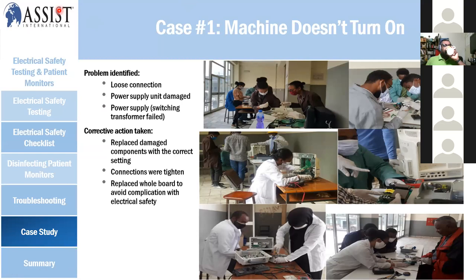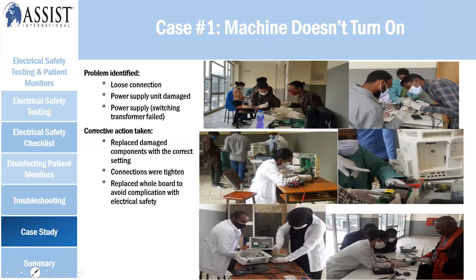The case study covers patient monitoring systems encountered during maintenance work. Case one: machine does not turn on. Identified problems included loose connections, damaged power supply, and a failed switching transformer. Corrective actions taken: damaged components were replaced with the correct settings, loose connections were firmly tightened and fixed, and for the failed switching transformer, the whole board was replaced to avoid complications with electrical safety.